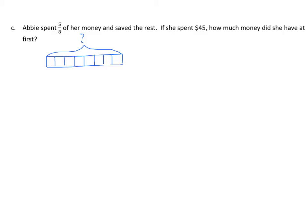So we had 5 eighths was spent. And she saved the rest. We know that this equals 45. Let's go through our process. We know that 5 units equals 45. 1 unit equals 45 divided by 5 equals 9.